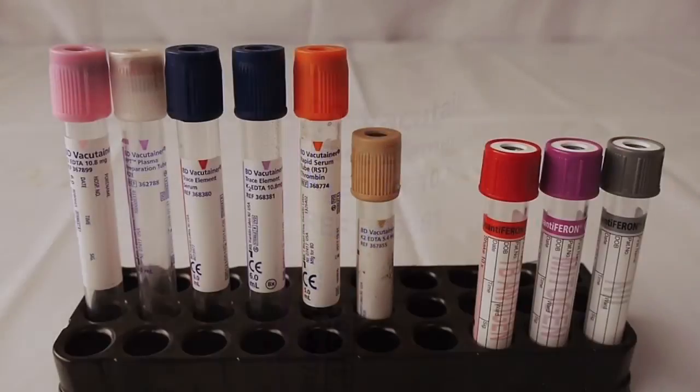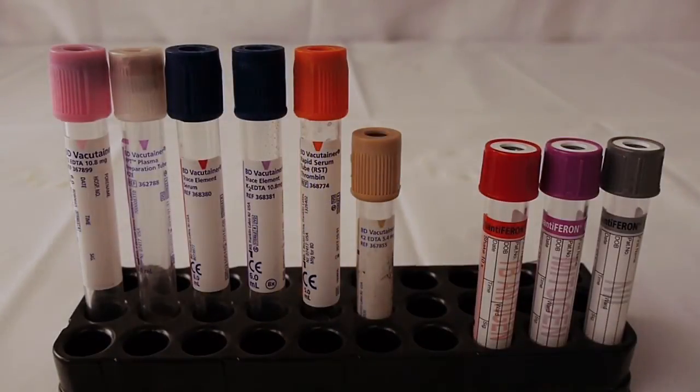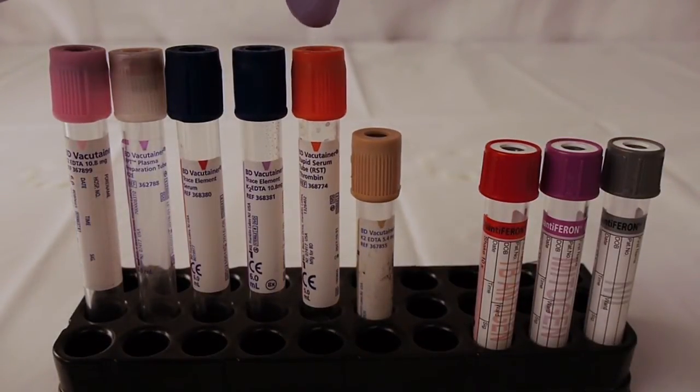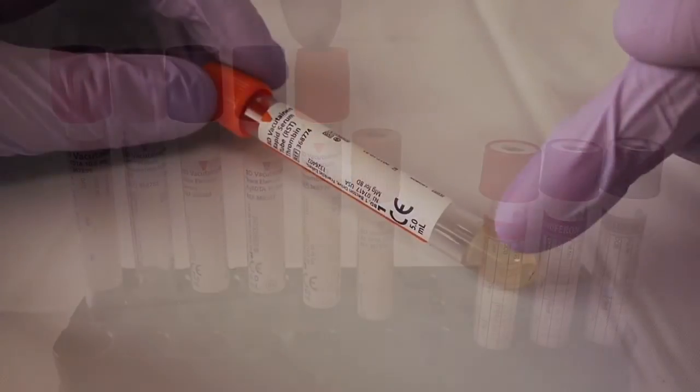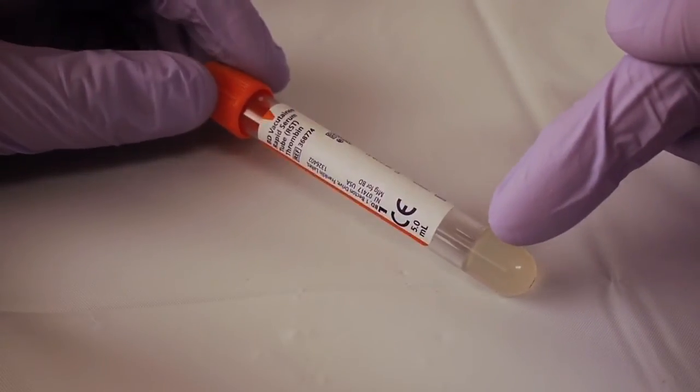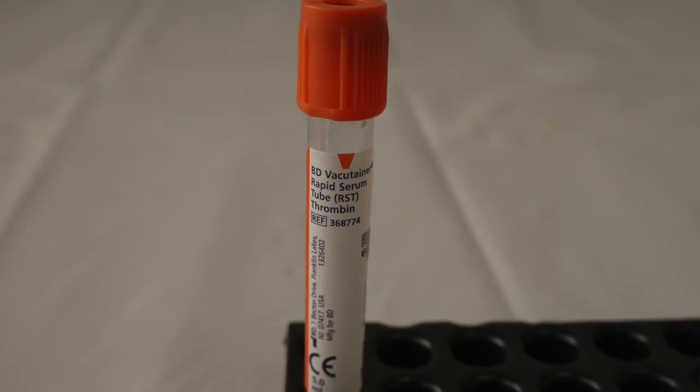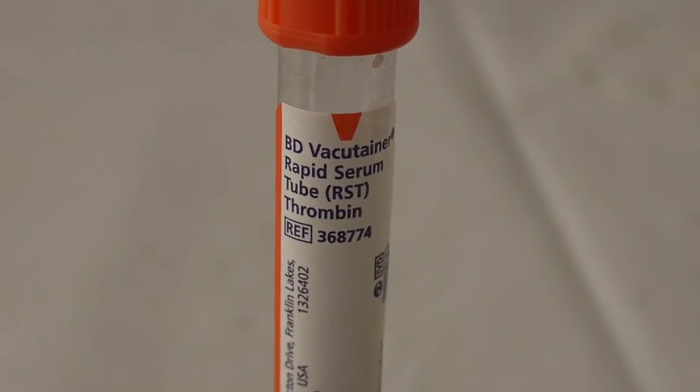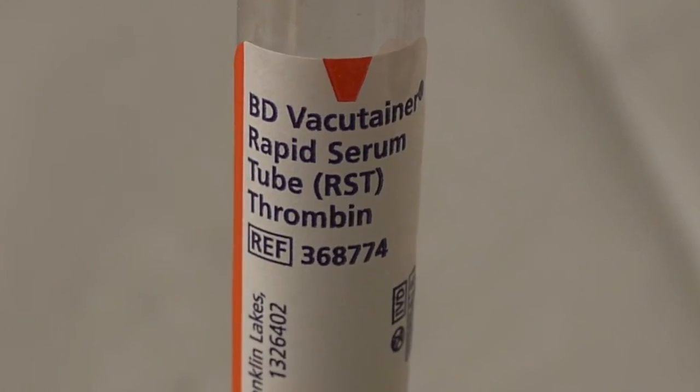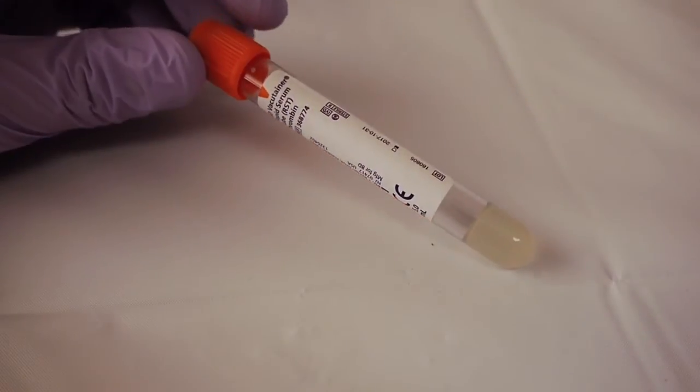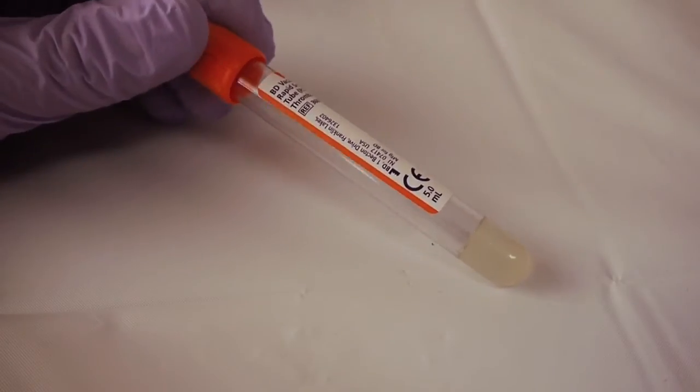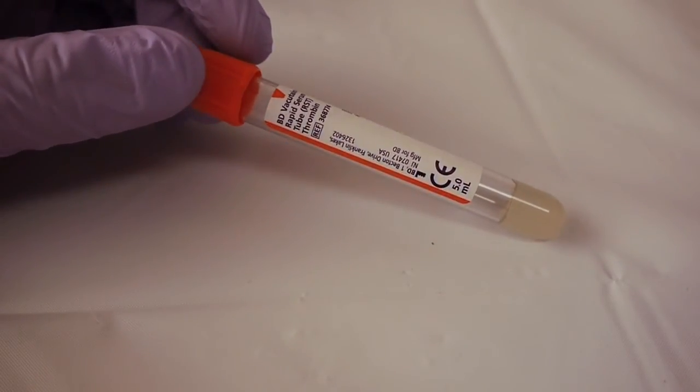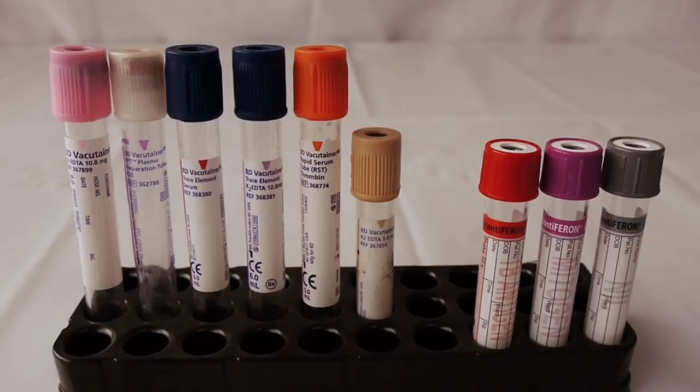The next tube we have is the orange top tube, also has a gel barrier. This tube has an additive known as thrombin. Thrombin is a super activator for clotting. This tube will clot under five minutes, and it is used for stat chemistry.